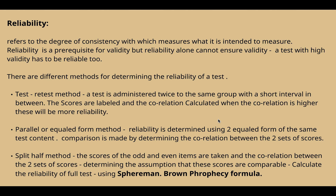In the test-retest method, a test is administered twice to the same group with a short interval in between. The scores are tabulated and the correlation is calculated. When the correlation is higher, there is more reliability.